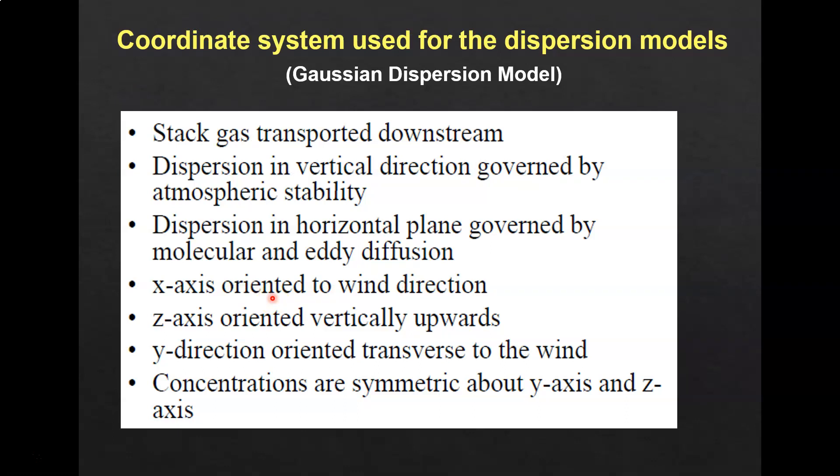Before developing the dispersion model, we need to understand the coordinate system used. This dispersion model uses the Gaussian dispersion model. The stack gas is transported downstream — dispersion in the vertical direction is governed by atmospheric stability, while dispersion in the horizontal plane is governed by molecular and eddy diffusion. X is oriented in the wind direction, Z is oriented vertically upwards, and Y is oriented transverse to the wind.